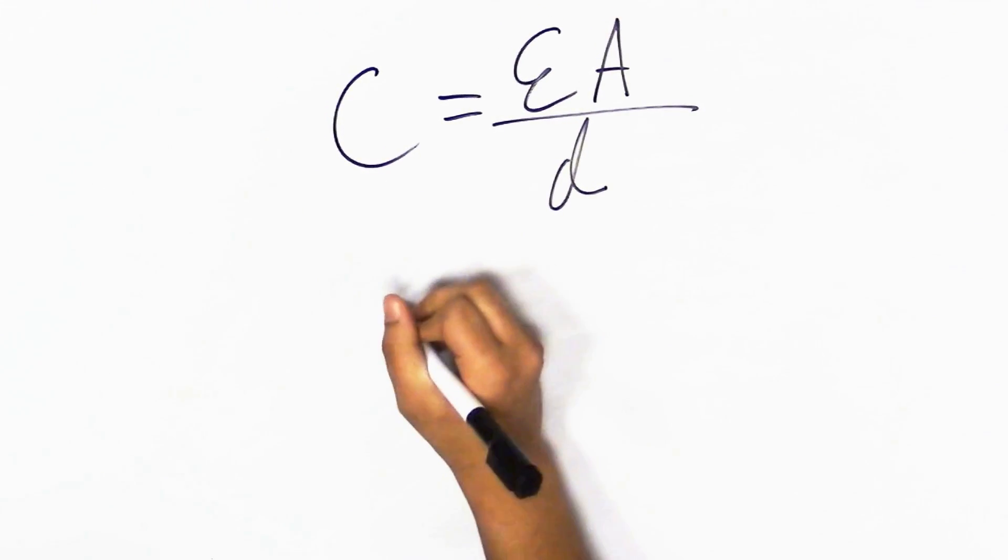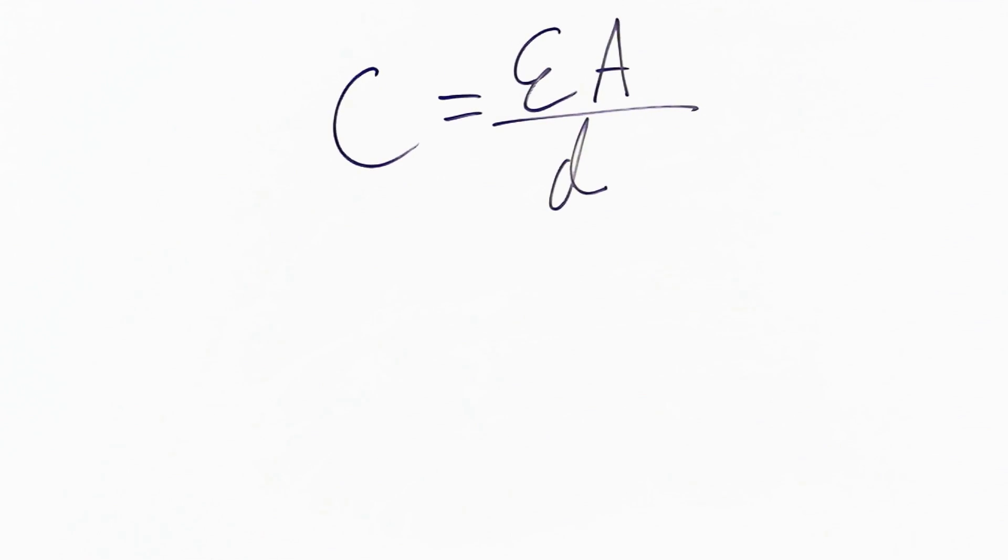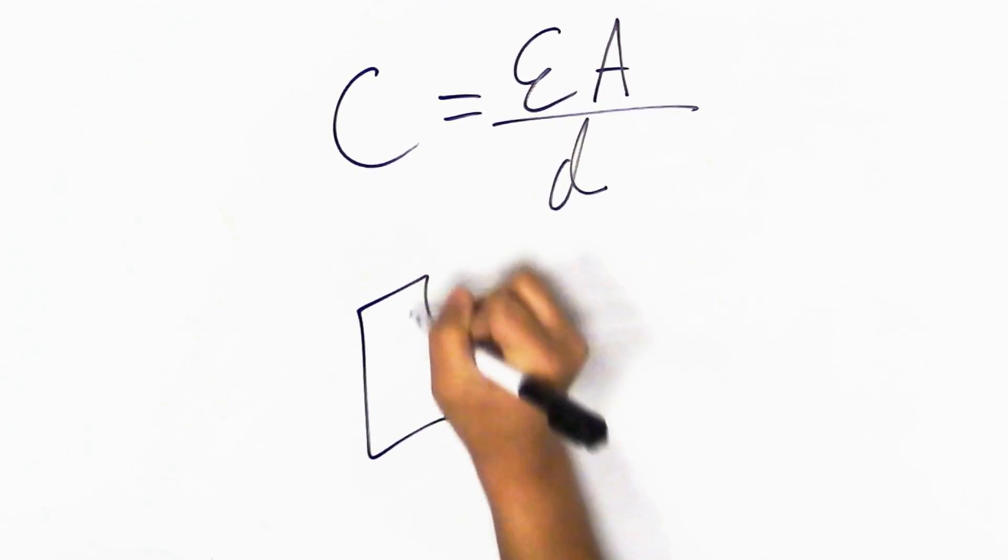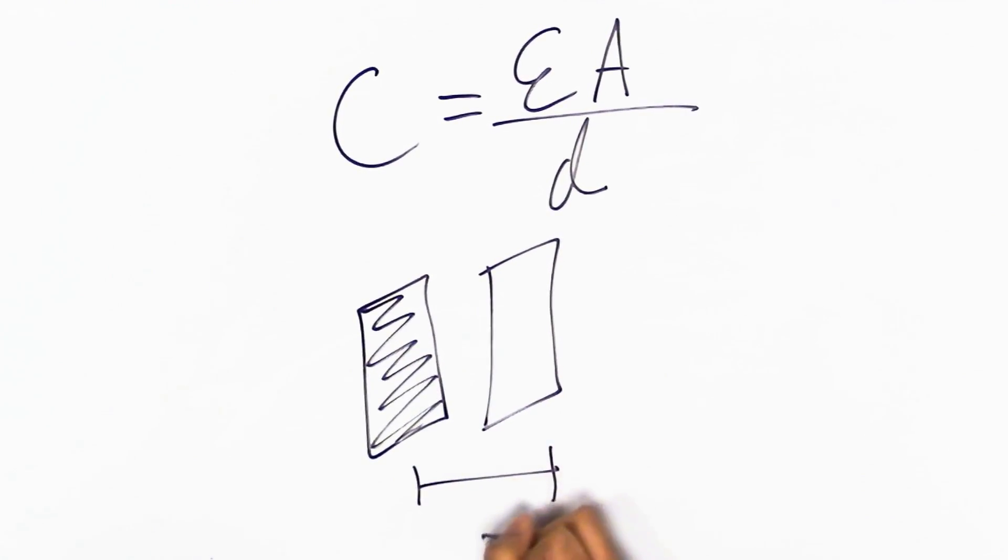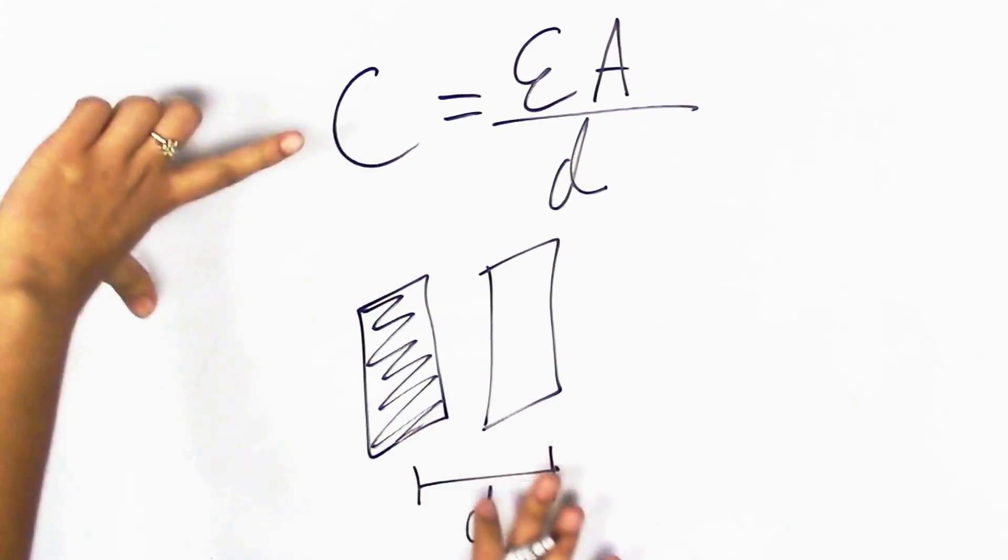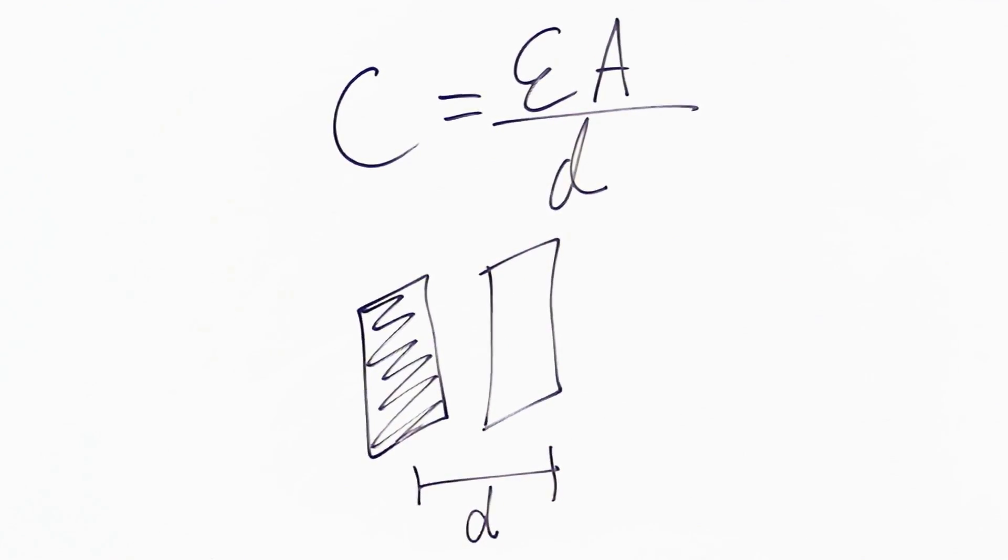Epsilon, I will get to later. A is the area of the parallel plate, and D is the distance between the two plates. So if you make the area bigger, you're going to have higher capacitance. If you make the distance smaller, you get higher capacitance.